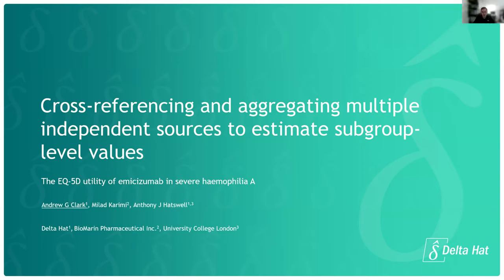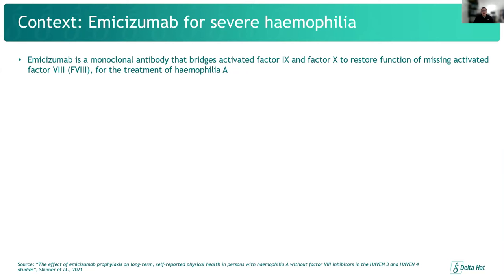Welcome to this presentation on cross-referencing and aggregating multiple independent sources to estimate subgroup level values. What I'm essentially going to do is describe an approach developed in R to estimate the utility for a particular group of individuals that was previously unreported. This work focuses on a drug called emisizumab, which is a novel treatment for severe haemophilia A that restores the function of missing activated factor VIII — an essential blood clotting protein which is deficient in people with haemophilia A, leading them to have bleeds.